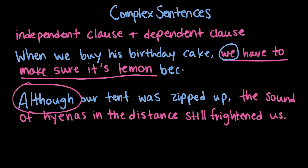What if I do something like this: 'when we buy his birthday cake, we have to make sure it's lemon because it's his favorite'? I think 'because it's his favorite' is a dependent clause, right? That's right. This sentence still completely works as a complex sentence because you still just have this one independent clause: 'we have to make sure it's lemon.' The thing about complex sentences is you can add more than one dependent clause if you want, and it's still considered a complex sentence. So it has to have just one independent clause, but as many dependent clauses as you want. Yeah, you can go crazy.